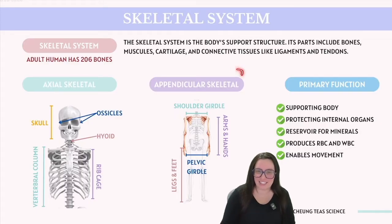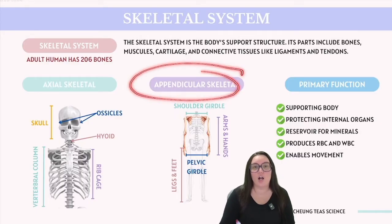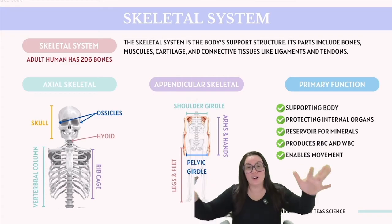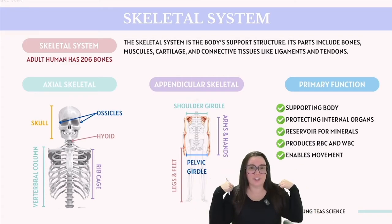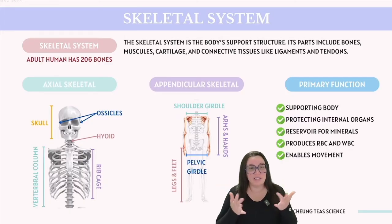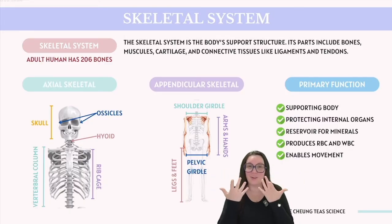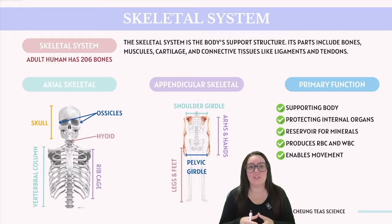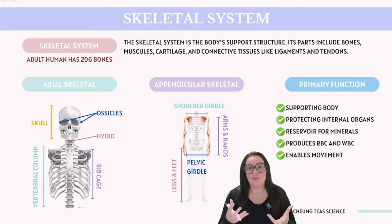The appendicular skeleton includes all the bones of our arms and the shoulder girdle, which comprises our collarbones and our shoulder blades. This is crucial for the function of our arms as well as our hands. Additionally, it encompasses the bones of our legs and our pelvic girdle, which is vital for enabling movement.